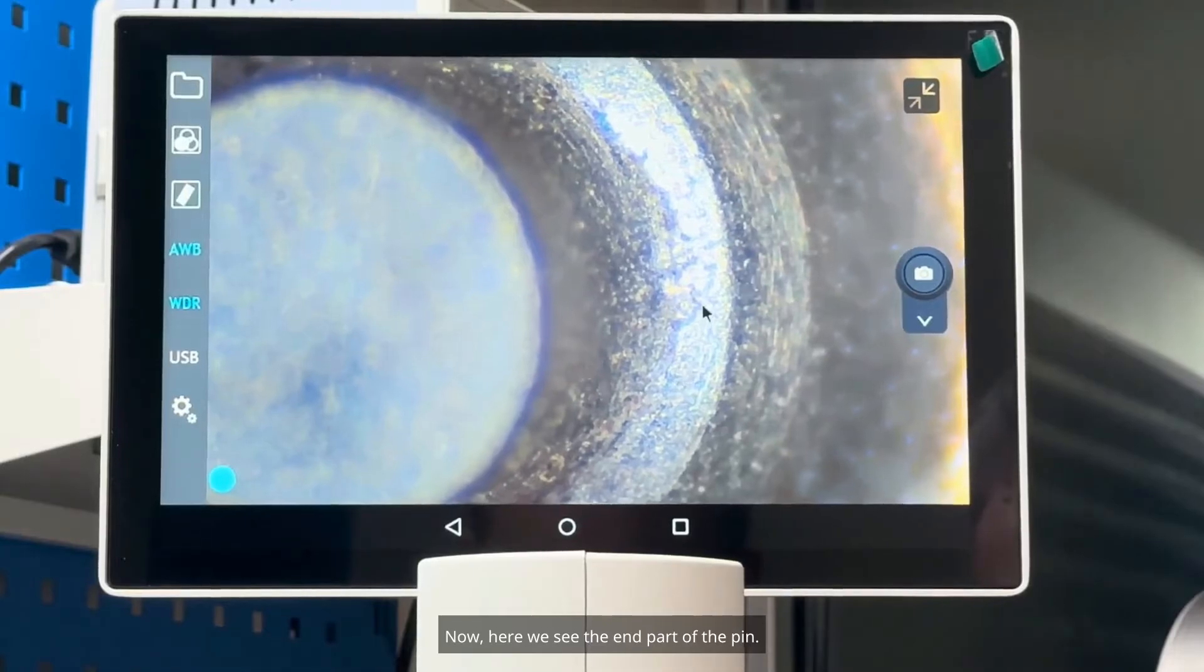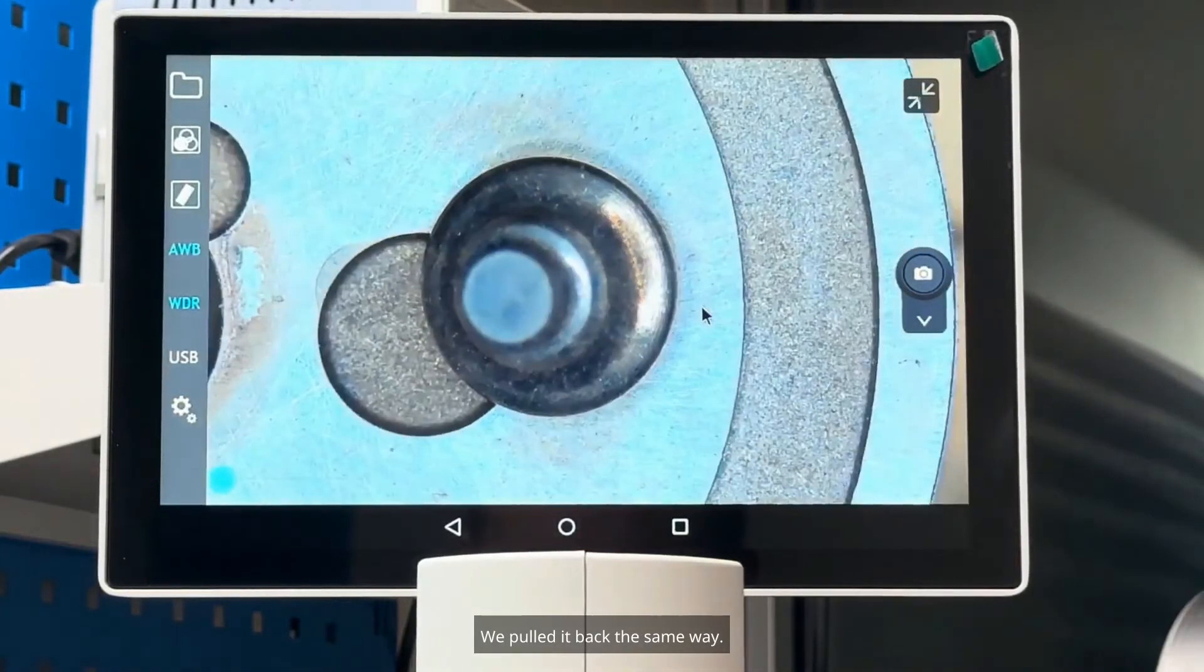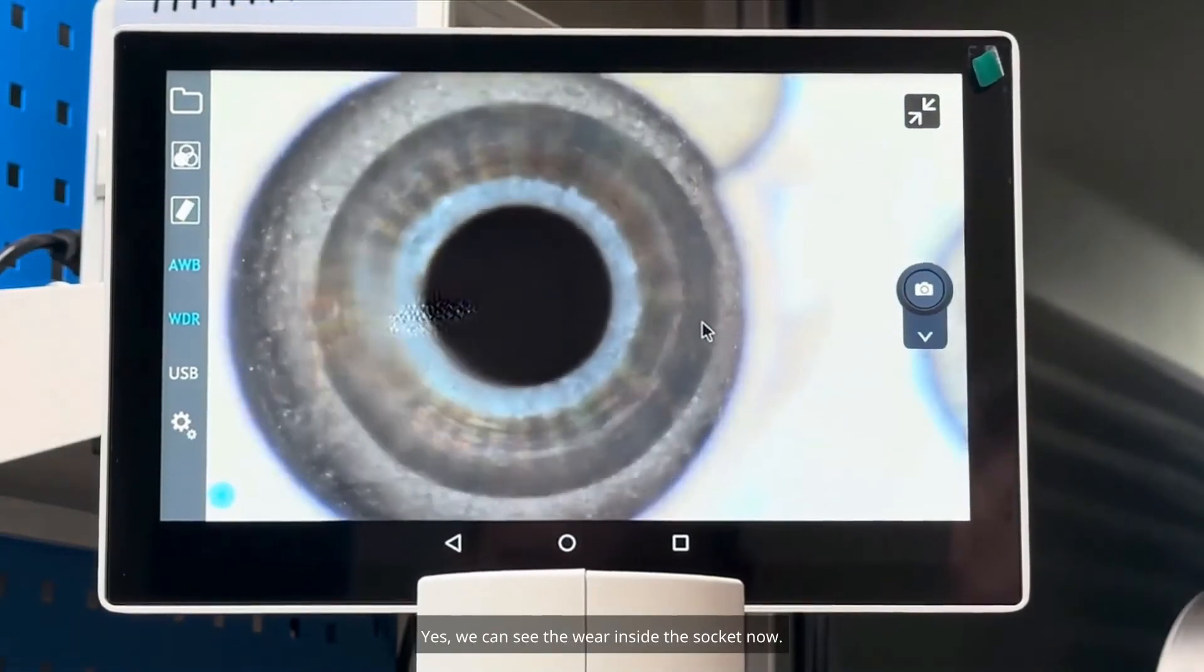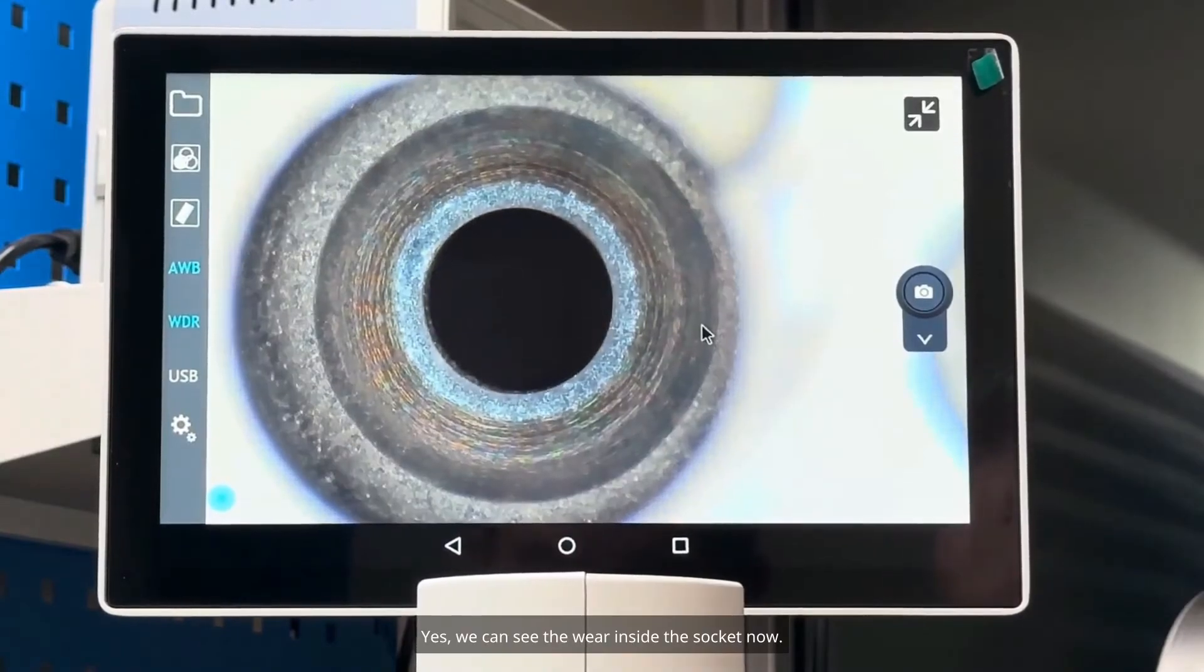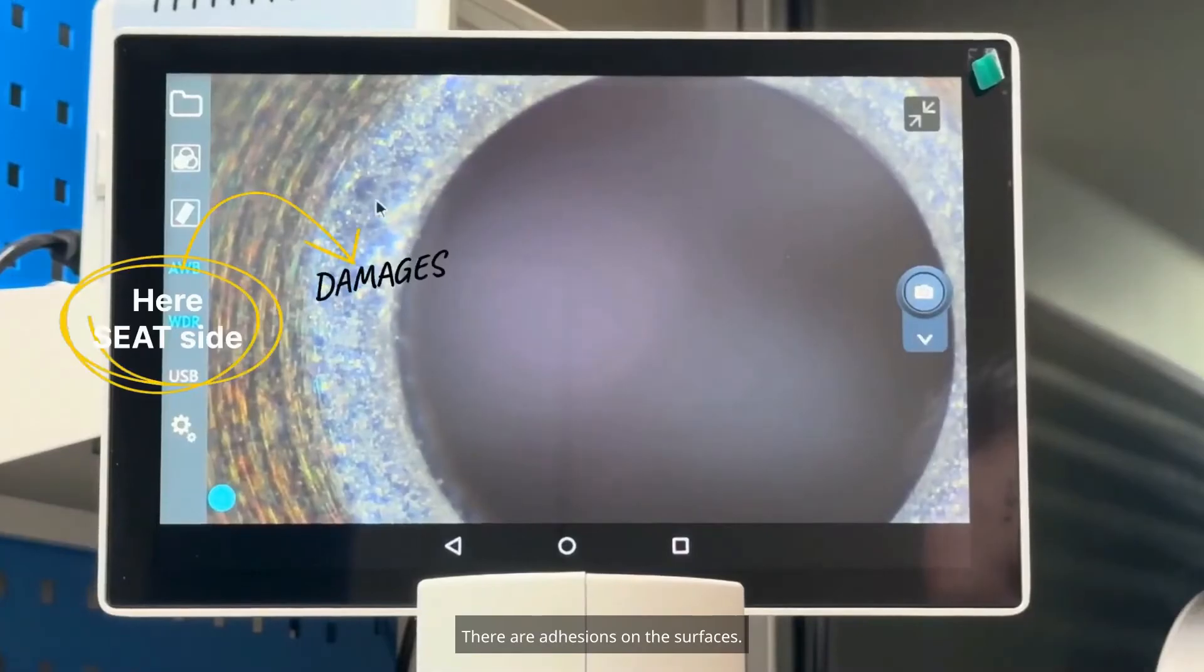Now, here we see the end part of the pin. We pulled it back the same way. We've reached the socket area. We're focusing on the socket. We can see the wear inside the socket now. We've zoomed in closely. There are adhesions on the surfaces.